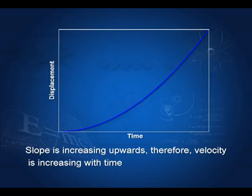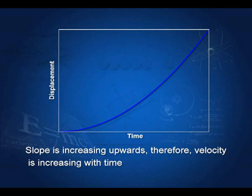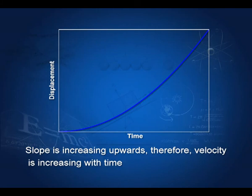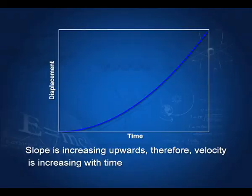Let us take another graph — a displacement-time graph again — but in this case the displacement is increasing and the slope is now increasing as we move along the time axis. That means as time increases, the slope increases; therefore the rate of change also increases. That means the velocity increases with time.